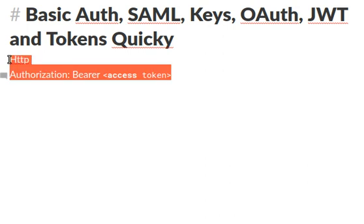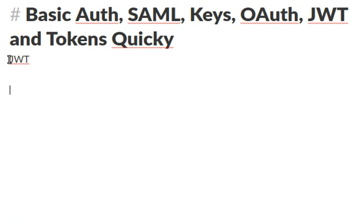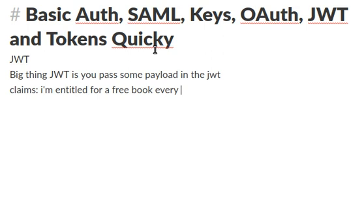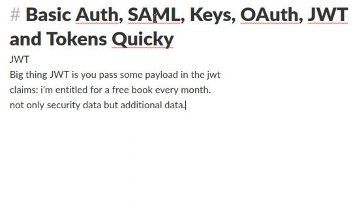JWT — pronounced 'Jot' — there is a lot of talk about it. The big thing with JWT is that you pass some payload inside the JWT. You don't only pass some username/password token credentials — you also pass more information, which is called claims. Inside the JWT you pass claims, for example: 'I am entitled to a free book every month.' JWT is a great way to bundle not only security data but additional data. This was the big thing — before JWT you had to figure out yourself how to pass additional data, and now you have a standard way.